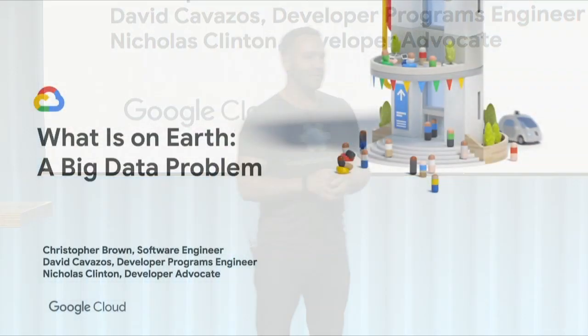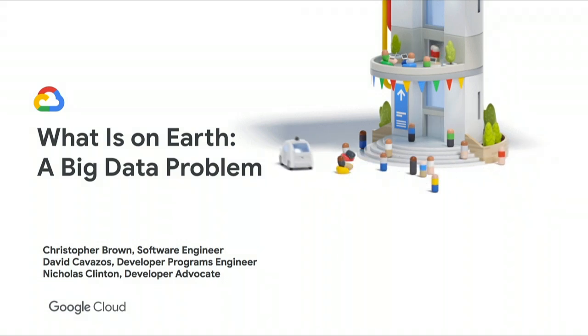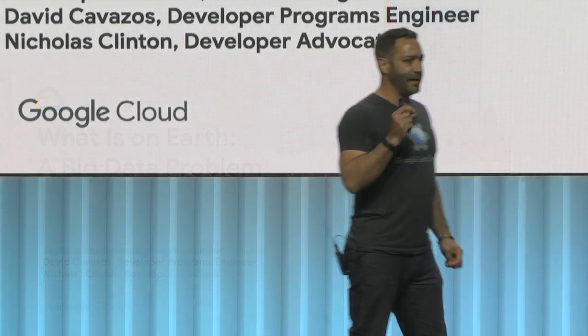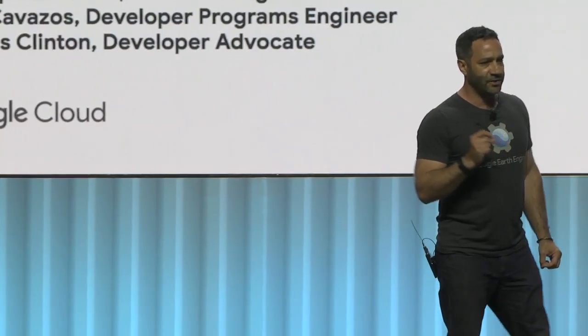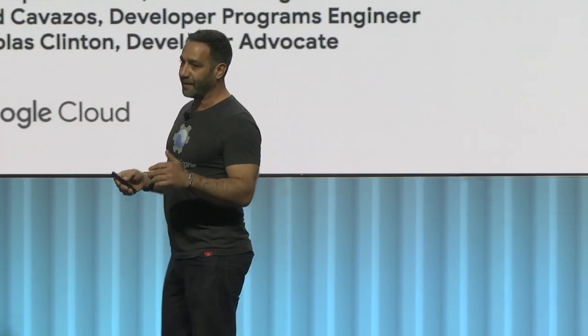Hello everybody. My name is Nick Clinton, Earth Engine Developer Relations. We're going to talk today about a project to map global land cover at higher resolution than ever before. Specifically, we're mapping land cover in each 30-meter patch of the Earth back to 2013. This is a very ambitious project, and this kind of global land cover time series has never been done before. Earth Engine teamed up with Cloud to make it happen.